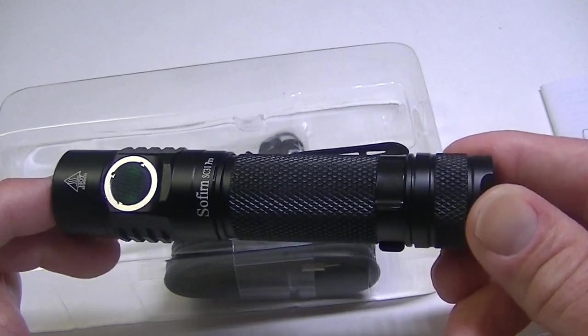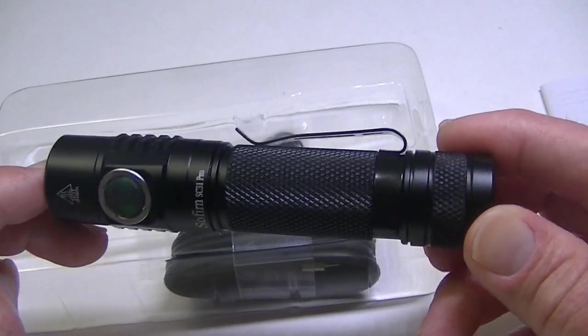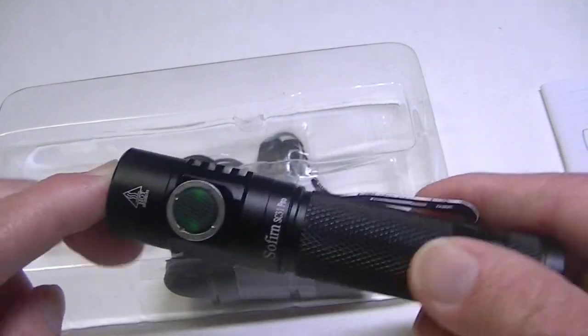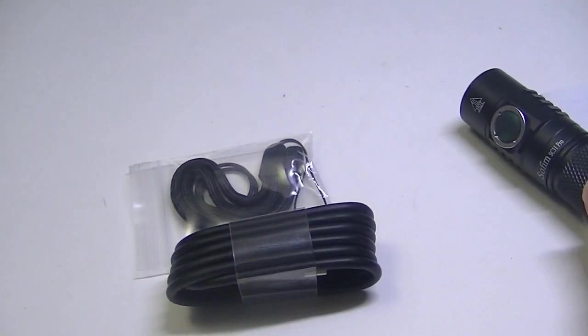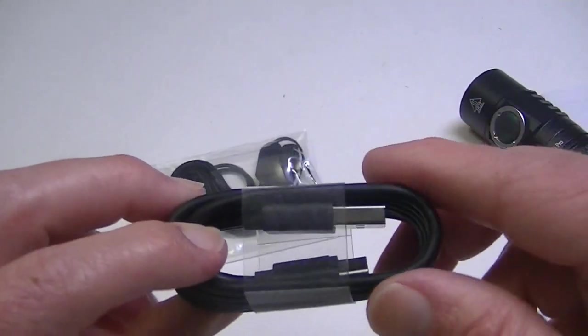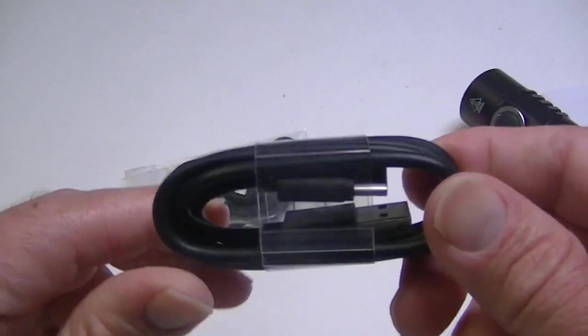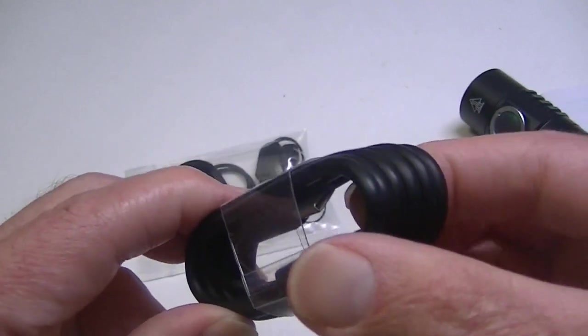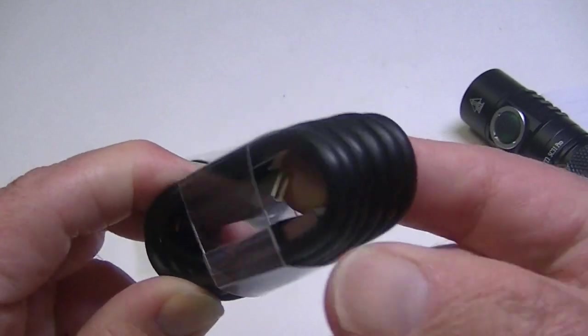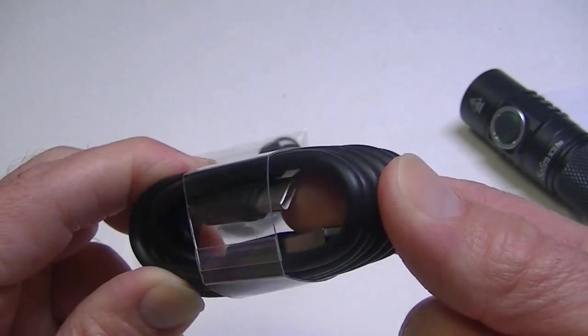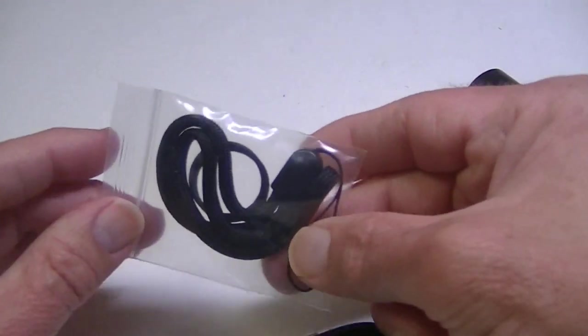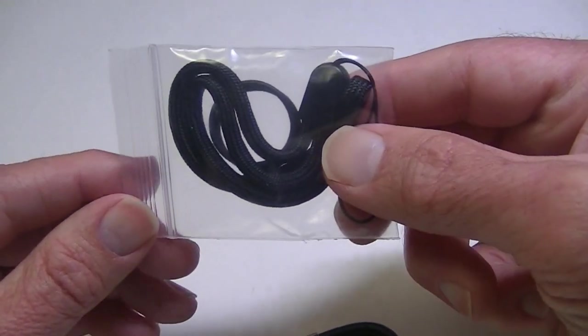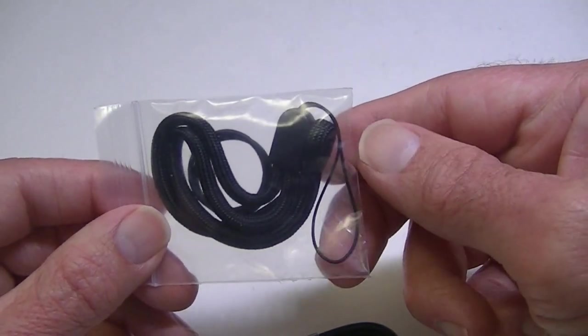So here with the SC31 Pro, here's the light. It's a pretty standard length at just four plus inches. Inside the package, not too many accessories, but here is a USB charger - it's actually USB-C. So for those who like the new type of charging technology, you have that with this. In the packet, just a couple of accessories: o-rings and a lanyard.